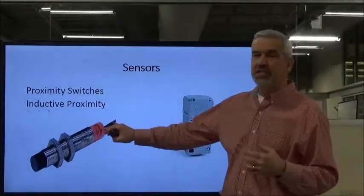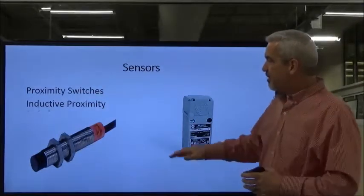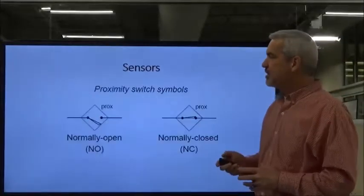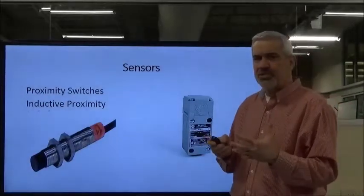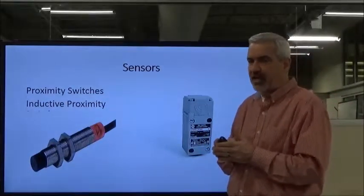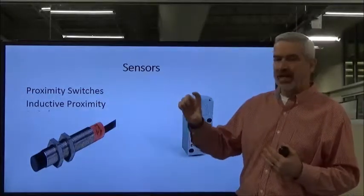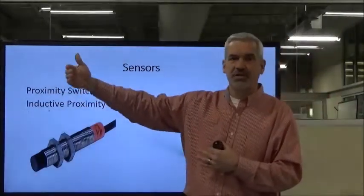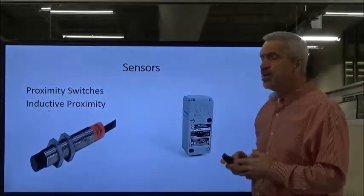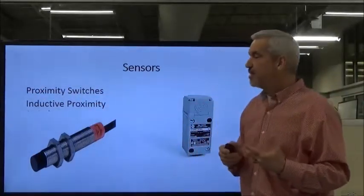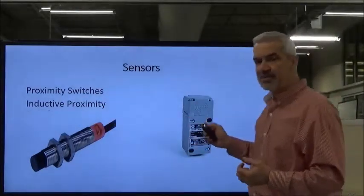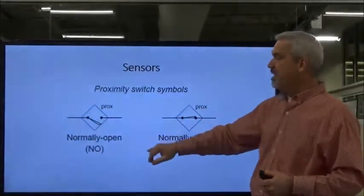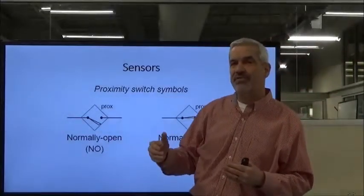The first thing we're going to talk about is the inductive proximity switch. It's barrel-shaped, and sometimes square — it looks a lot like a limit switch. It gets its name because we measure something in very close proximity to the switch itself. With a limit switch, you'd put a cat-whisker arm out there 12 to 14 inches away. The proximity switch measures things much, much closer.